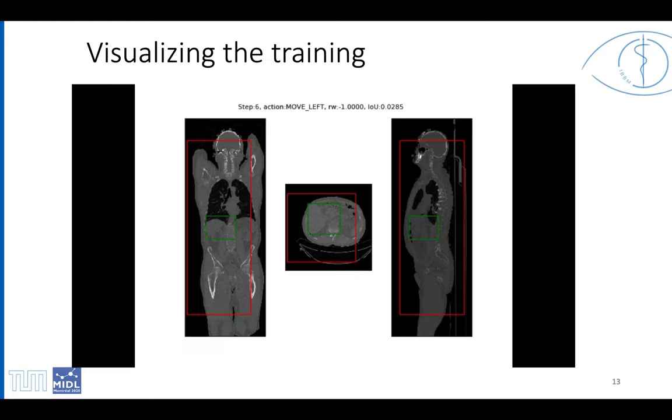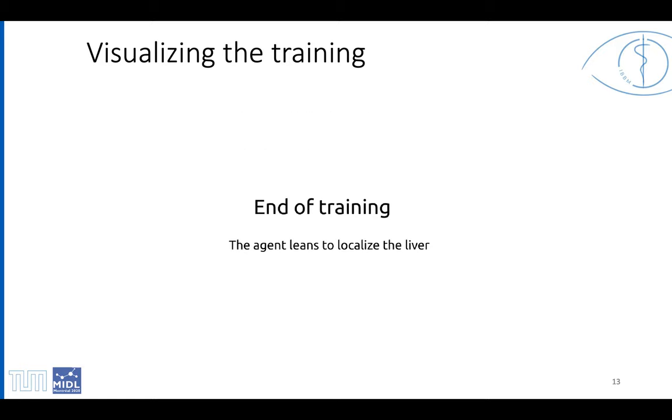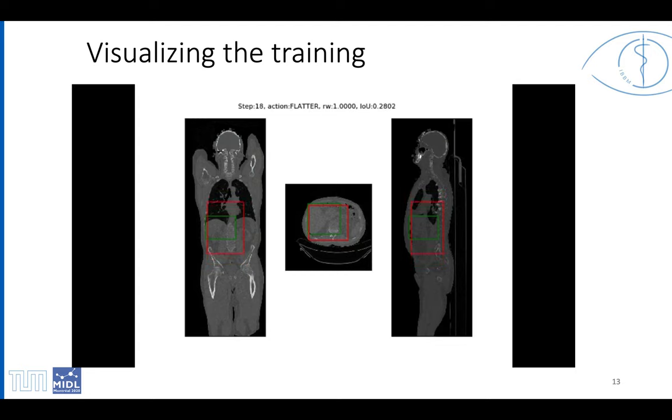Here, a visualization of the training process. At the beginning of the training, after 10 epochs of training, and finally, at the end of the training, the artificial agent learns to localize, in this case, the liver.